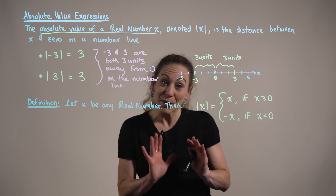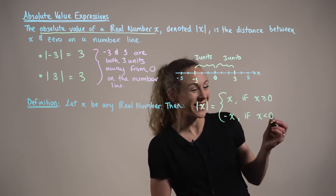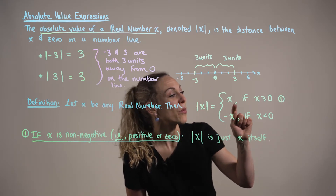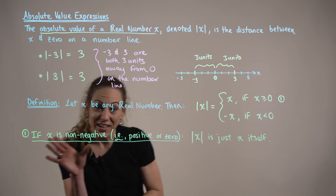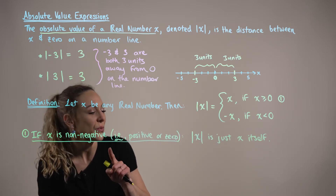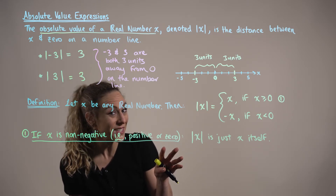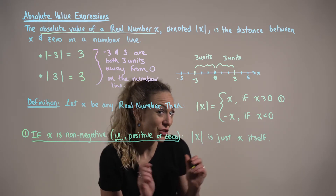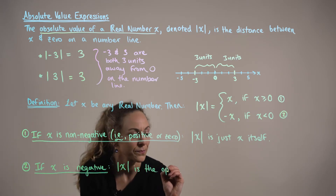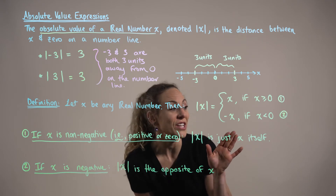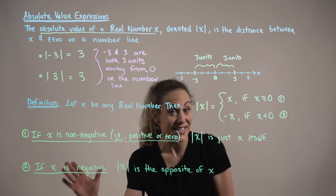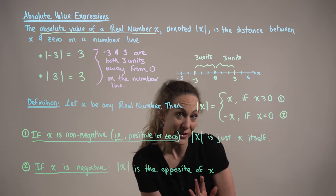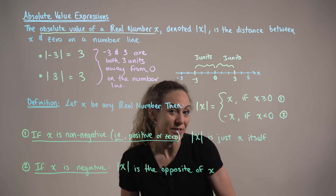Let's pause and think about what each equation is telling us. Equation one of the absolute value definition tells us that if x is non-negative — in other words, if x is positive or equal to zero — then the absolute value of x is just x itself. Equation two tells us that when x is negative, the absolute value of x is going to be the opposite value of x. Let's think about examples of each case.